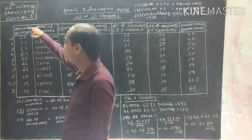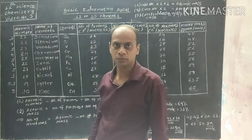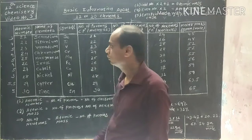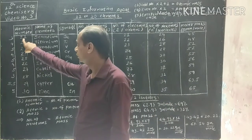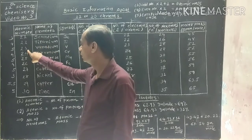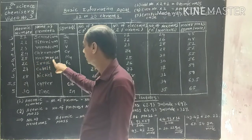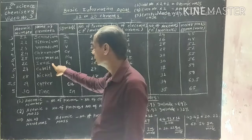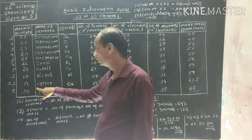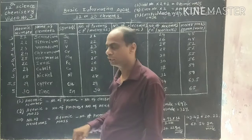In column number one, atomic numbers are written from 21 to 30. In the second column, names of the elements are listed. Element 21 is Scandium, 22 Titanium, 23 Vanadium, 24 Chromium, 25 Manganese, 26 Iron, 27 Cobalt, 28 Nickel, 29 Copper, and 30 Zinc.